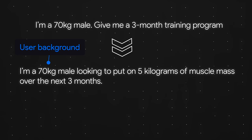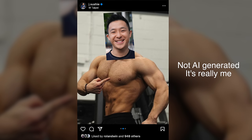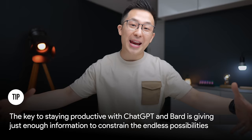Back to the workout example, we now have: I'm a 70 kg male looking to put on five kilograms of muscle mass over the next three months. I only have time to go to the gym twice a week and for one hour each session. Give me a three-month training program to follow. The key to staying productive with ChatGPT and Bard is giving just enough information to constrain the endless possibilities.